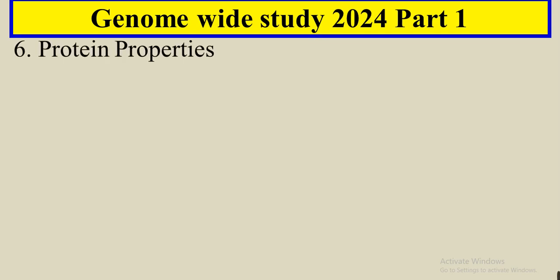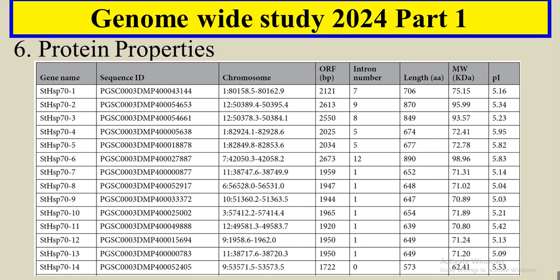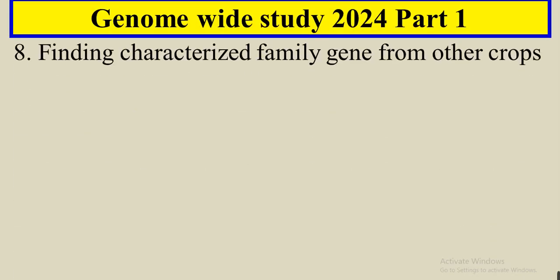And also find out the protein properties of that protein family in one click, not searching all these one by one. It also includes the characterized family genes - how we can find out our protein families genes that were characterized, that were functionally characterized, whose function was experimentally proved and literature is available. So how we can find out that characterized genes from other crops.